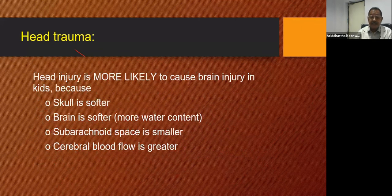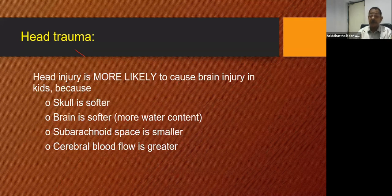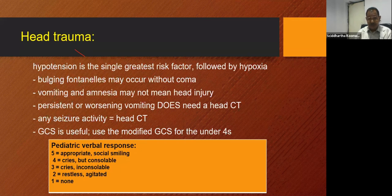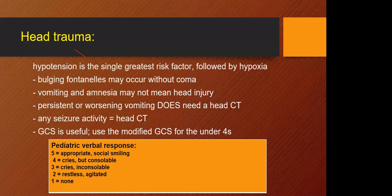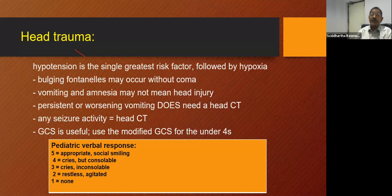Head injury is more likely to cause brain injury in children because the skull is softer, the brain is softer with more water content, the subarachnoid space is smaller so the cushioning effect is less, and cerebral blood flow is greater. Hypotension is the single greatest risk factor in head trauma, followed by hypoxia. Bulging fontanels may occur without coma. Vomiting and amnesia may not always mean head injury. Persistent or worsening vomiting does warrant a head CT. Any seizure activity also warrants a head CT. GCS is useful — use the modified GCS for the under-fives.